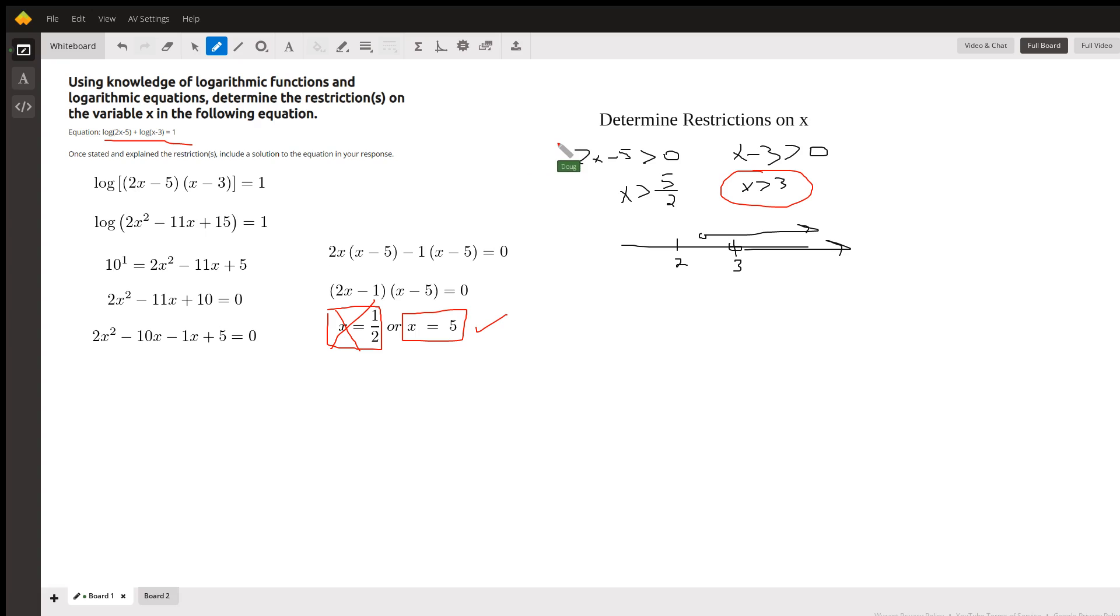Okay, over here, here's how you determine the restrictions. When you take the log of an algebraic expression, that algebraic expression has to be greater than zero because you cannot take the log of a non-positive number. So that means 2x minus 5 has to be greater than zero, and x minus 3 has to be greater than zero.